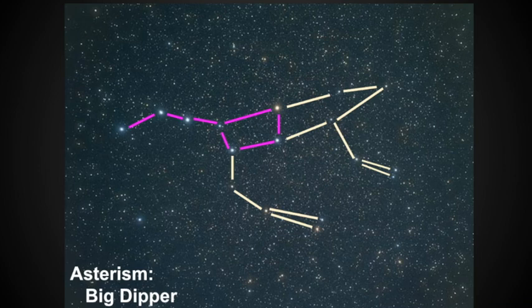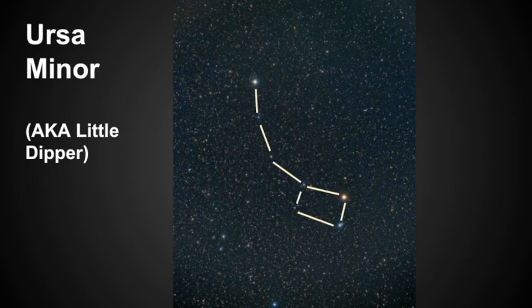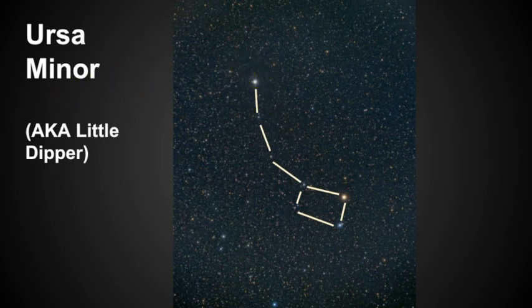Now let's look at Ursa Minor, also known as the Little Bear — it also has an alternate name of the Little Dipper. In science we often find many names for the same thing, and constellations are the same case. The shape of Ursa Minor is similar to that of the Big Dipper, but its handle curves in a different direction and it is smaller in size.